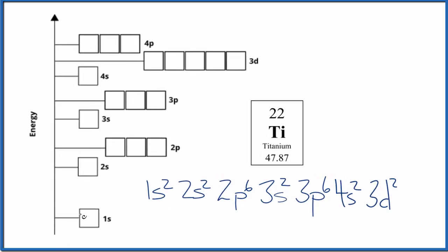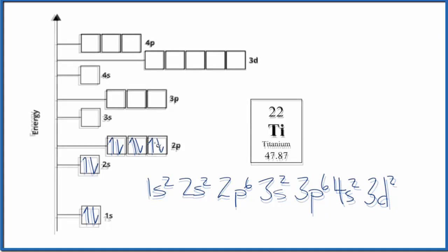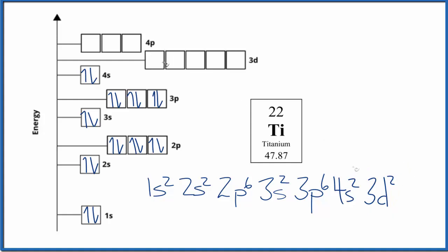So we have 1s², putting them in opposite directions. 2s² in the second energy level, 2p⁶ — we spread them out before we pair them up. 3s², 3p⁶, 4s², 3d². We'll put those last two here in the d orbital. And this is the atomic orbital diagram for titanium, Ti.